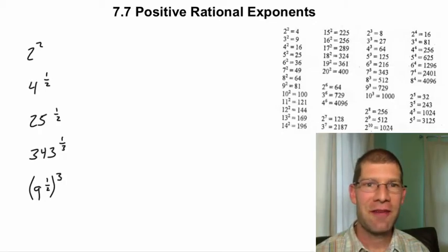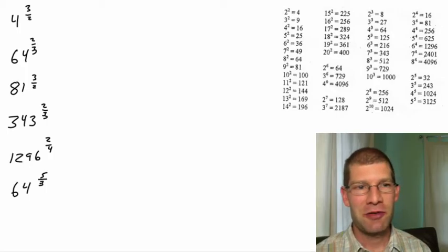Hi, chapter 7, section 7 is on positive rational exponents, and where we're going is doing things like these here, where we have a fraction in the exponent, but always a positive number, so 4 to the 3 halves, 64 to the 2 thirds, and so on.